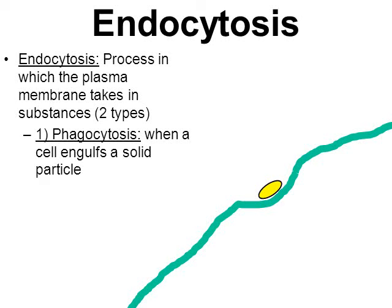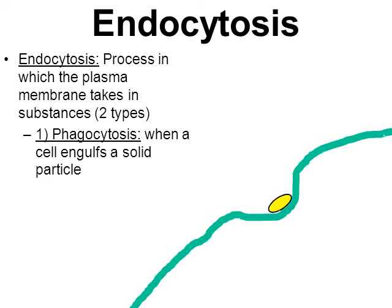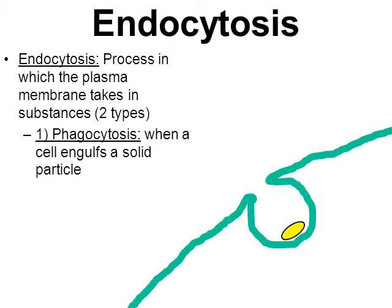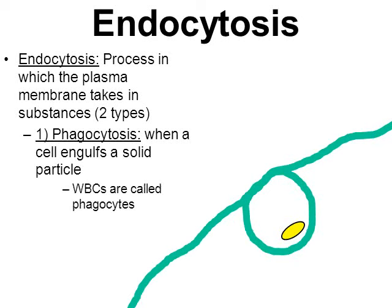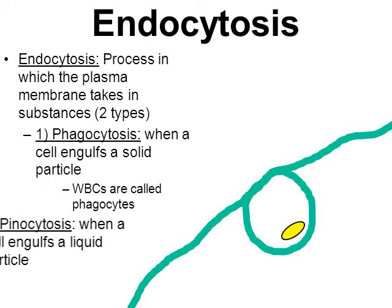In the animation, you see that yellow object being taken in gradually until it's fully surrounded by the cell membrane. Perhaps this was a bacteria that the cell swallowed up to kill it, or a food molecule the cell needed. White blood cells — WBCs — are a type of phagocyte. They're called phagocytes because they swallow up bacteria and viruses through phagocytosis.